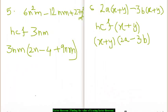Now, in the fifth example, we have 3 terms, so this is a trinomial. Let's see how to factorize this polynomial. Again we go about finding out the HCF of all three terms — that is 6n square m minus 12nm and then 27n square m square.